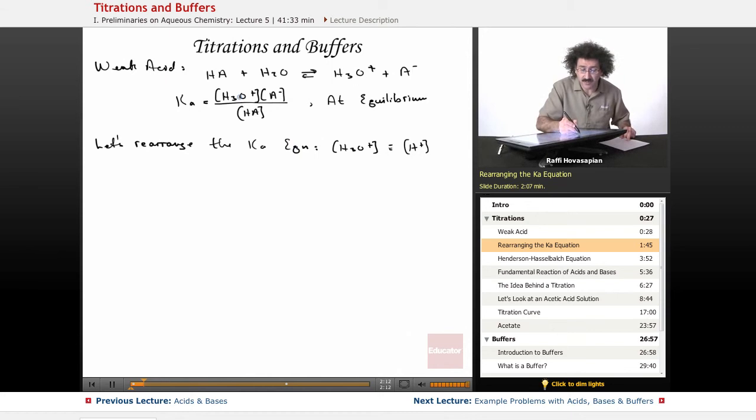So when I rearrange this to solve for the hydronium ion concentration or the H+, I move this over here and I move this down here, I get the following. I get the concentration of H+ is equal to Ka times the HA concentration divided by A-.